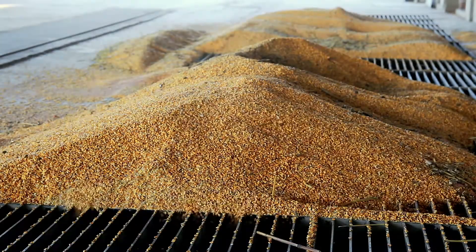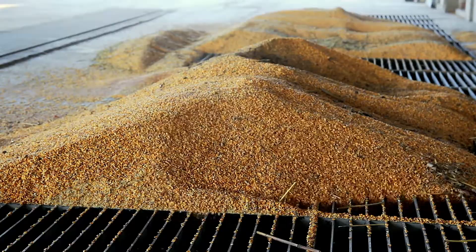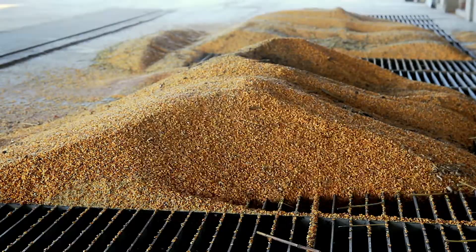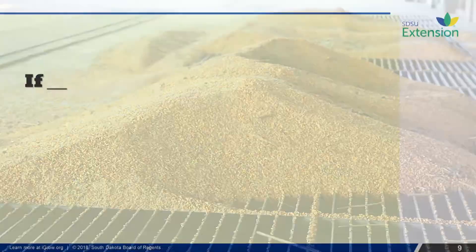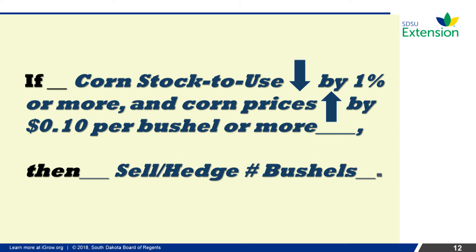Fundamental rules, like technical rules, can also be used in a marketing plan. An example of a fundamental rule would be: if corn stocks-to-use decreases by 1% or more, and corn price increases by 10 cents per bushel or more, then you would sell or hedge a specified quantity of bushels.